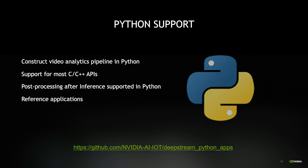We are fully committed to providing full Python support for our developers. We released an alpha version last year and based on feedback, we are improving and extending it. In the future release, most native C/C++ APIs will be supported in Python. We're also adding support for post-processing tensor data from inference in Python — instead of writing a C routine to parse bounding boxes, you can take raw tensor data and parse bounding boxes directly in Python. To get started, we've provided several sample applications in Python on GitHub.